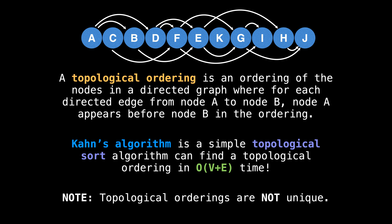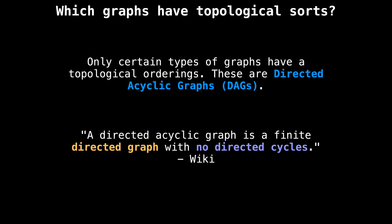It's often the case that a graph has multiple valid topological orderings, and in general any of them will suffice. Going back to our example of getting dressed, it doesn't so much matter in what order you get dressed, so long as you get dressed without any issues. One thing to keep in mind is that only certain types of graphs have topological orderings, and those are directed acyclic graphs.